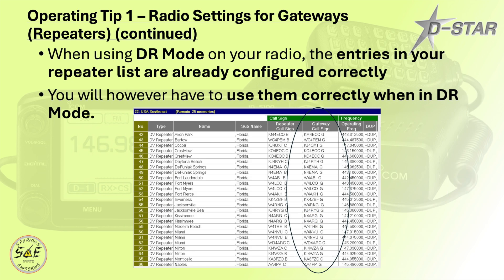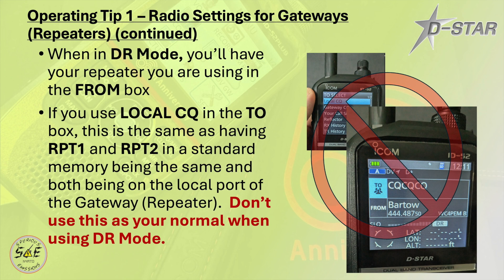The repeater list entries you can download for use in DR mode are already configured correctly. It's how you use that list in DR mode that determines whether you're heard by everybody on the network. One way not to use it correctly: when you're in DR mode, you'll have your local gateway and repeater in the FROM box, but if you use Local CQ in the TO box, that's the same as having RPT1 and RPT2 set to the local port. Don't use this as your normal setting, because only people locally on the repeater will hear you — anyone else on the DSTAR network, whether on a reflector, a gateway, or connected via hotspot, will not hear you.